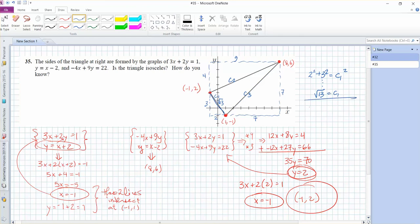And then if you did the same thing for C3, 7 squared plus 7 squared equals C3 squared. Then you'll end up with root 98 for C3.